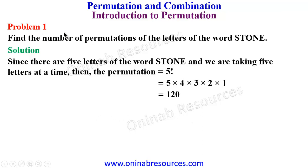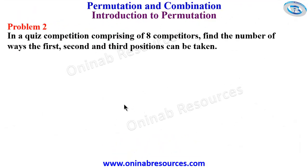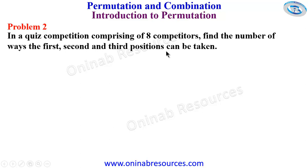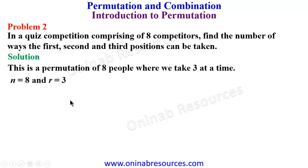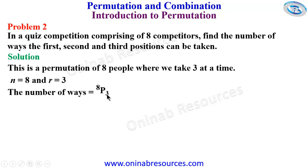Problem two: in a quiz competition comprising eight competitors, find the number of ways the first, second, and third positions can be taken. In our solution, this is a permutation of eight people taking three at a time — the three people being those taking first, second, and third positions. So n = 8 and r = 3.